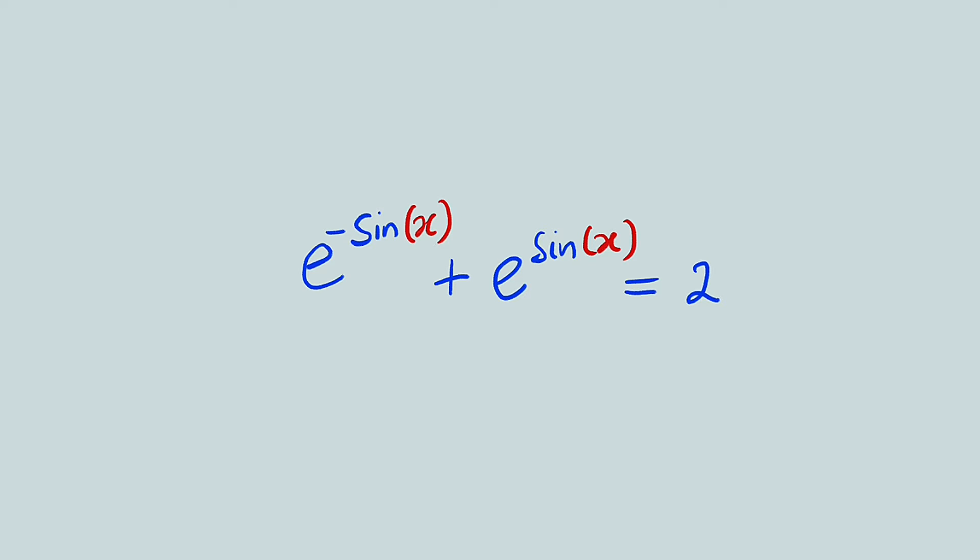Hello, good morning viewers. In this tutorial, we're going to be looking for the values of x that can satisfy this equation. This is an exponential trigonometric equation. We have e to the negative sine x plus e to the sine x equal to 2, and we want to find those values of x that can make this equation true.